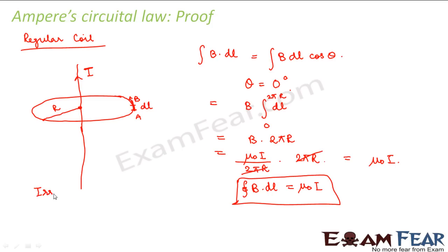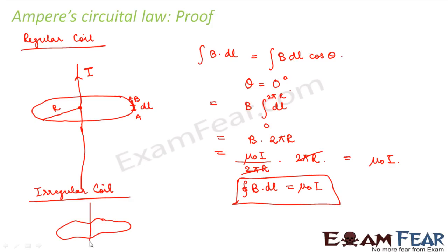Now, even if the loop is irregular — meaning it is of any arbitrary shape — what happens in that case? For an arbitrary shape, if you assume a small element dl₁, its distance from the conductor will be r₁; another element dl₂ will have distance r₂, and so on. Since it is not a circular loop, the radius is not constant, and each element will subtend a different angle at the center.